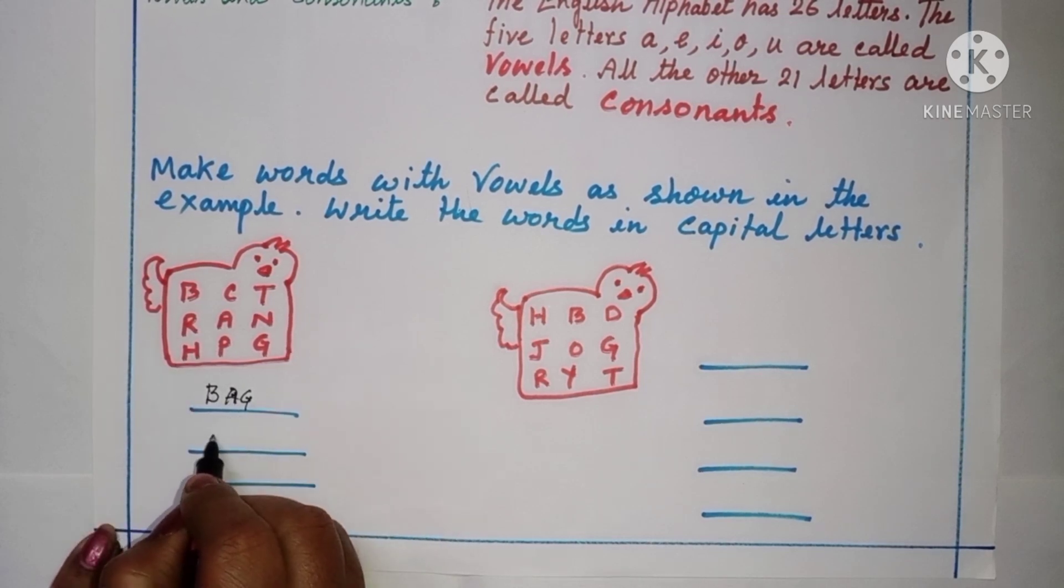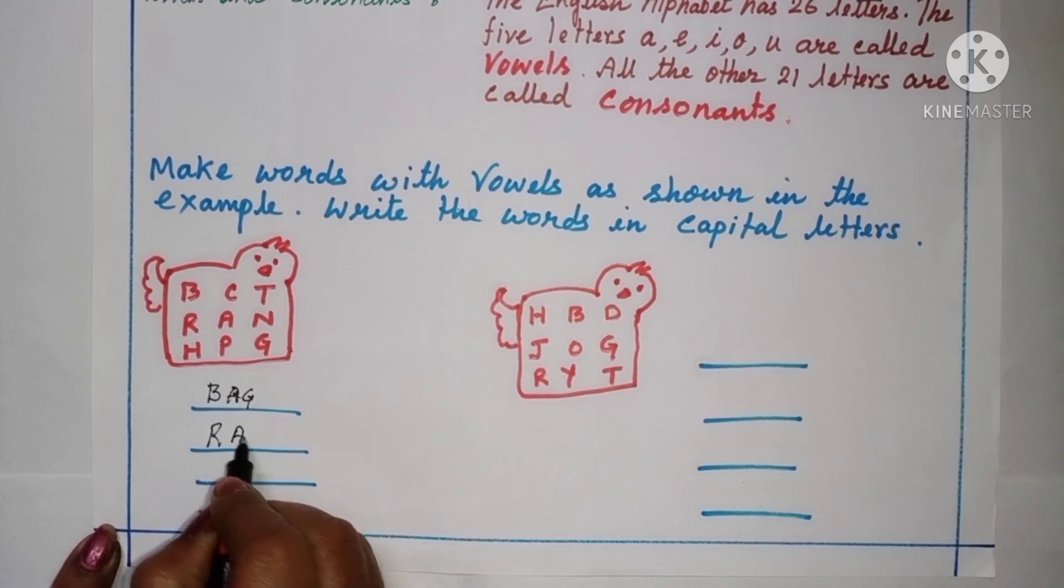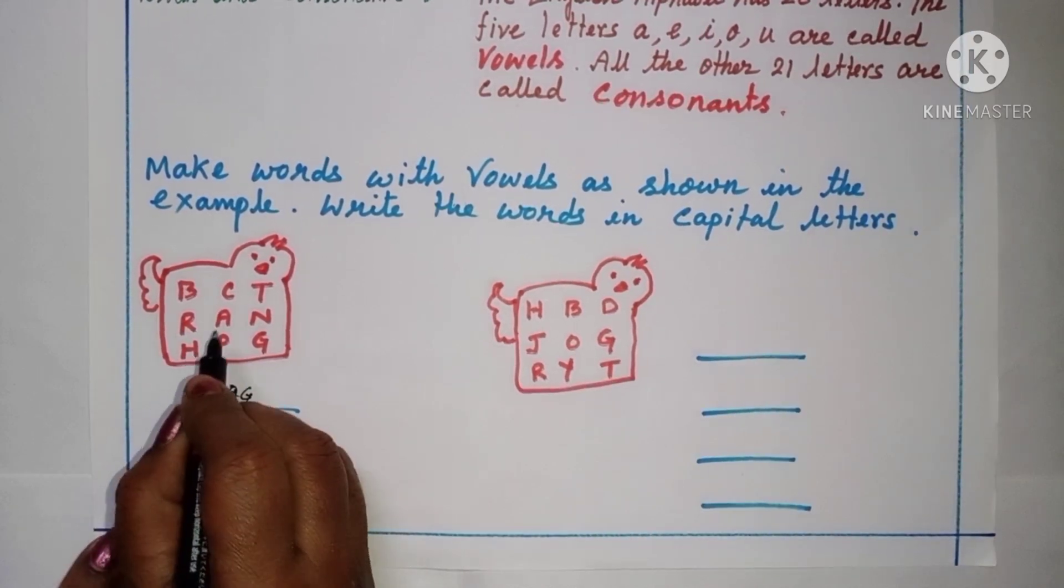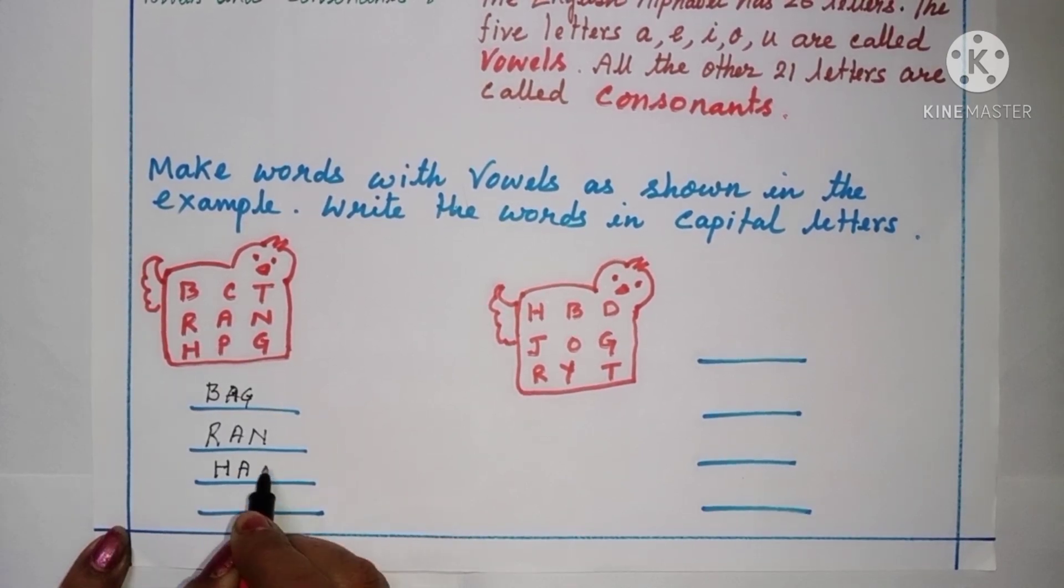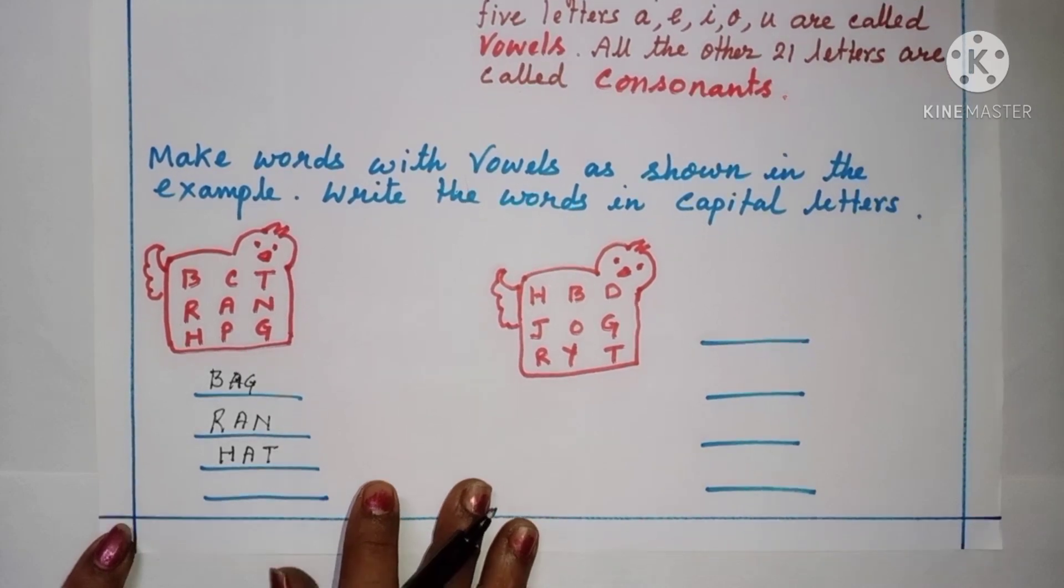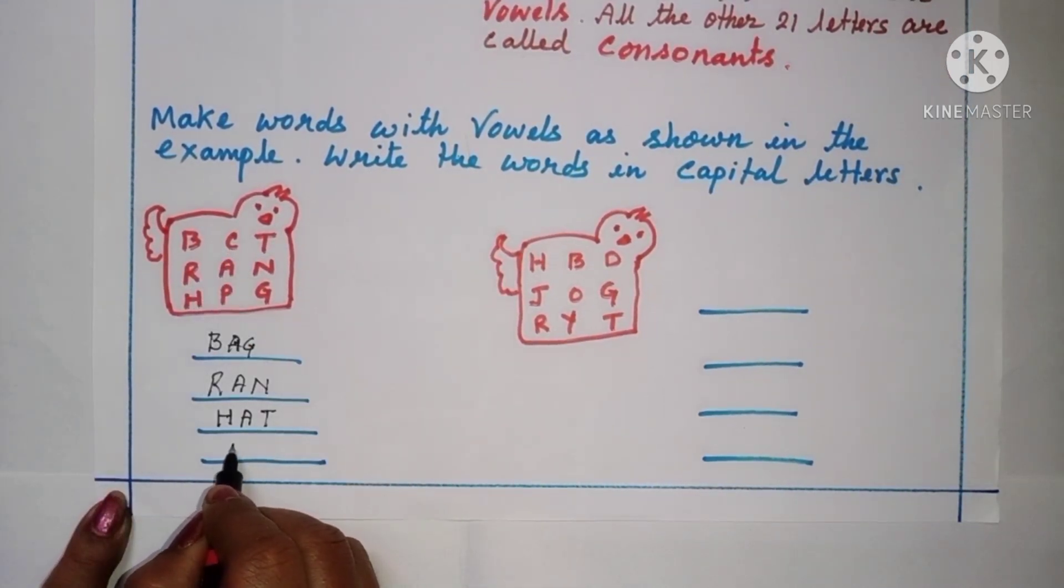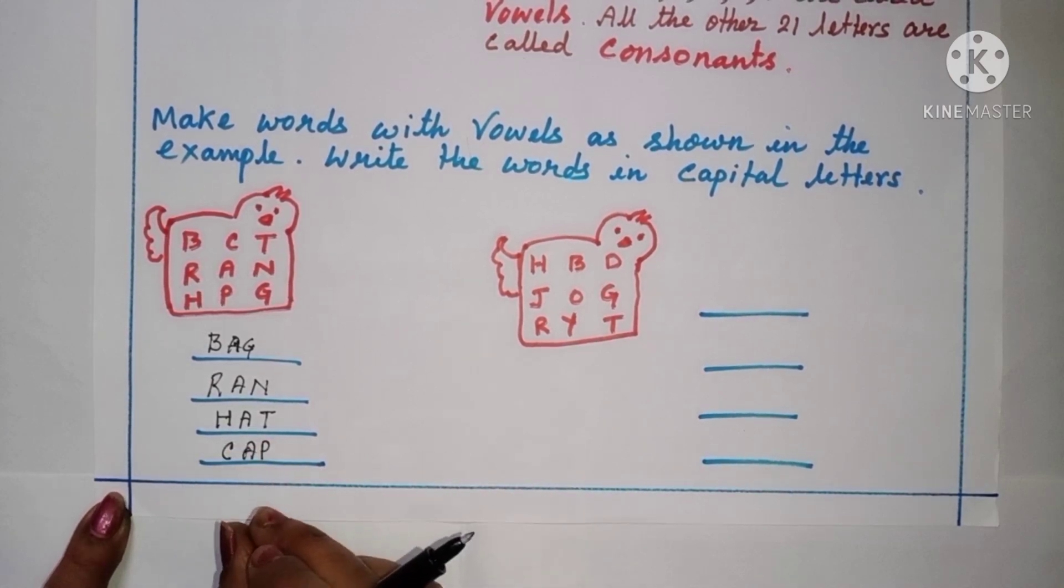Then, R, A, N. Ran. Then, you see, H, A, T. H, A, T. Hat. Now, again, you see, C, A, P. C, A, P. Cap. So we got small, small word from this letter.